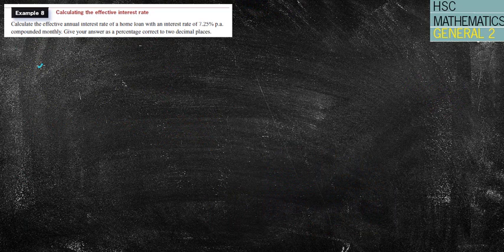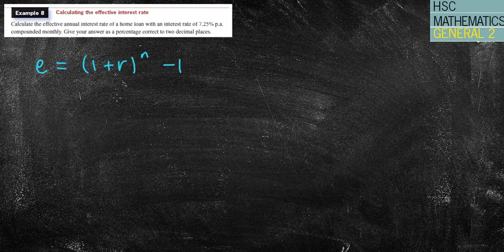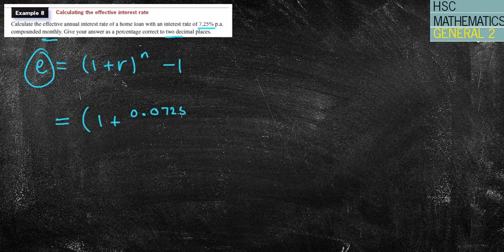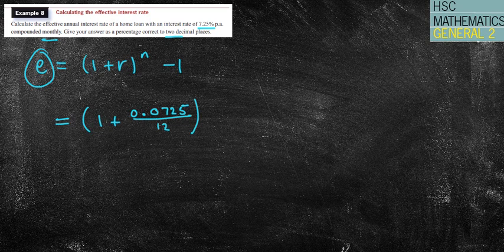Calculate the effective annual interest rate. The effective interest rate formula is (1 + r) to the power of n, minus 1. We're given an interest rate of 7.25% per annum, compounding monthly, and we want the answer as a percentage correct to two decimal places. So we have 1 plus 0.0725 over 12 — that gives us the monthly rate — and we raise that to the power of 12.